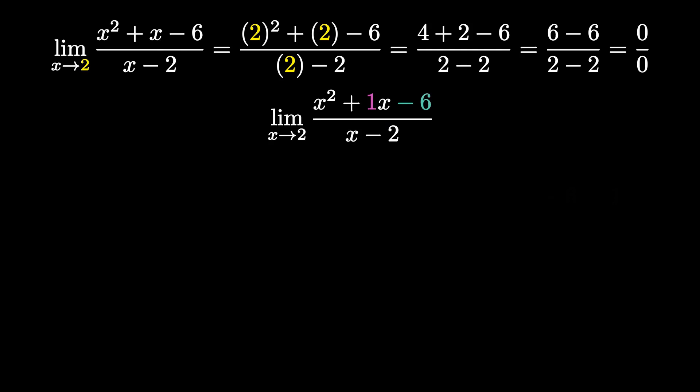You want to find two numbers that both multiply to give your last term and add to give your middle coefficient. So we want two numbers that multiply to give negative 6 and add to give positive 1. I always say focus on pairs that multiply to give negative 6 first.